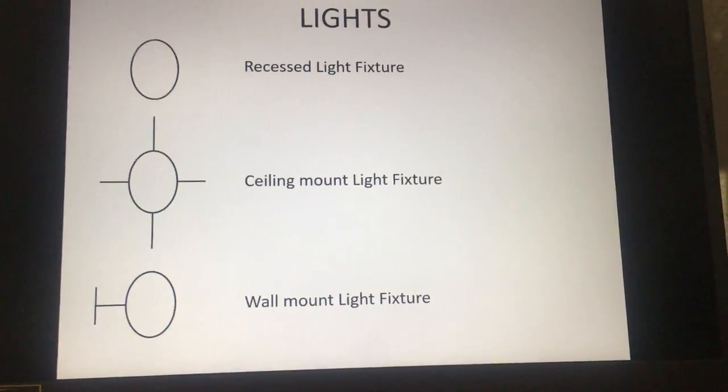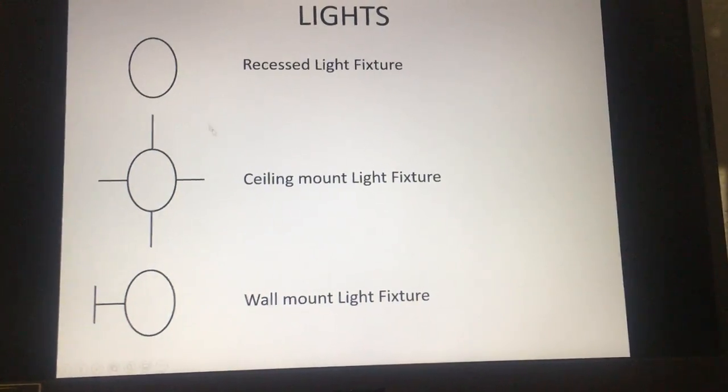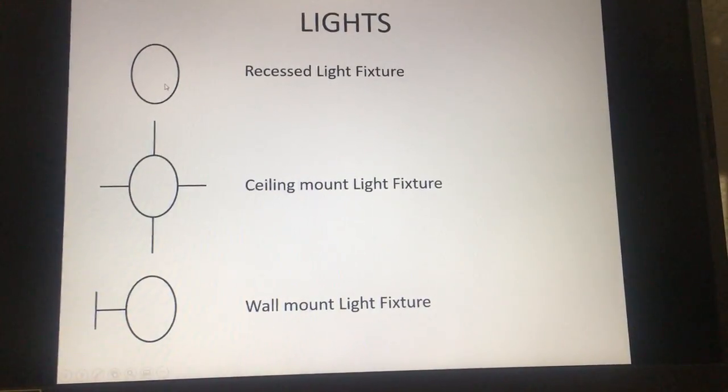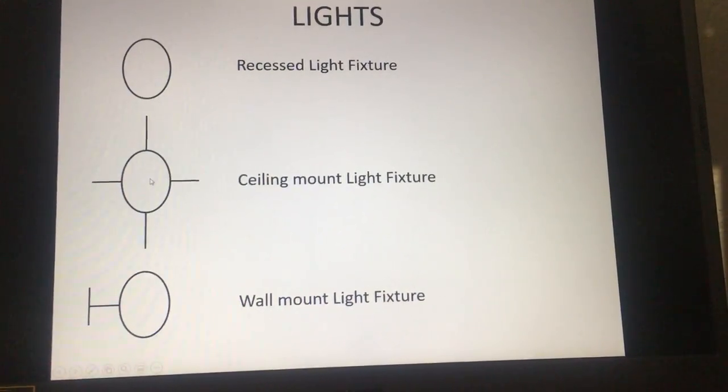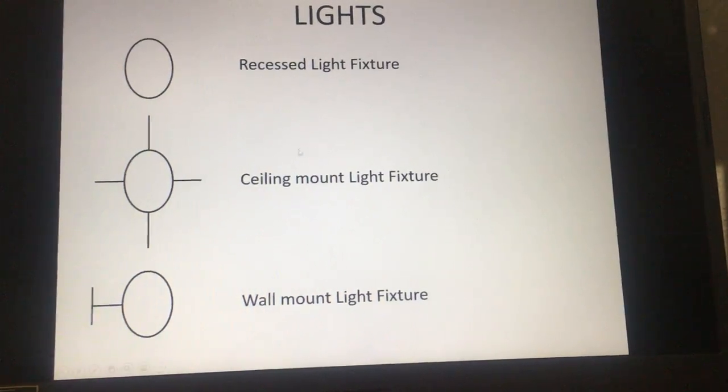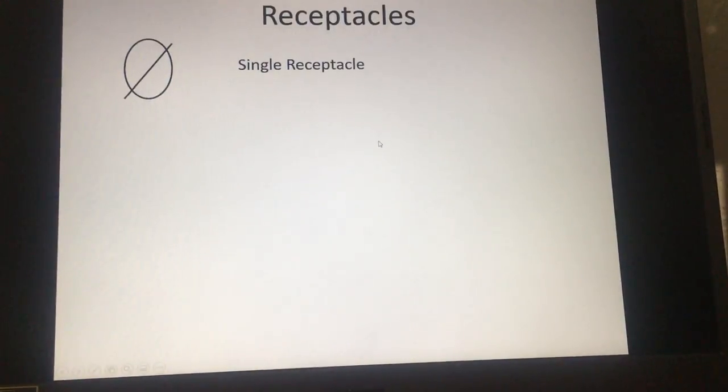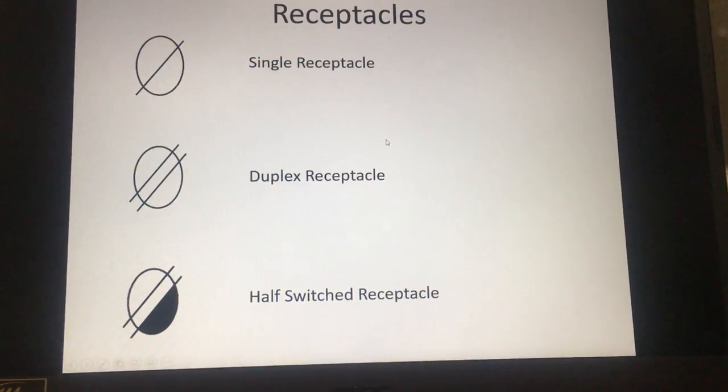This would be a light in the ceiling that is flush. This would be a light that you actually mount to a box like a chandelier or any other type of light. That's a single receptacle, a duplex, and a half switch.